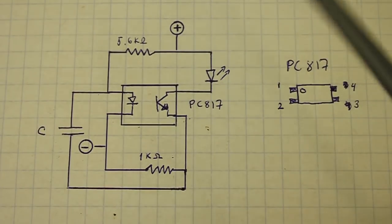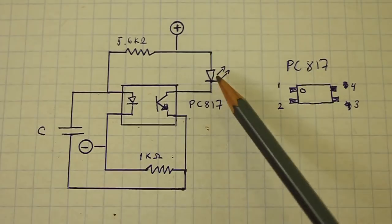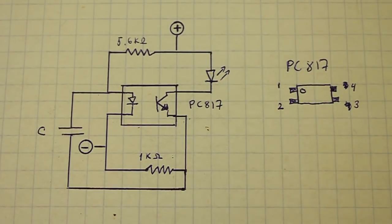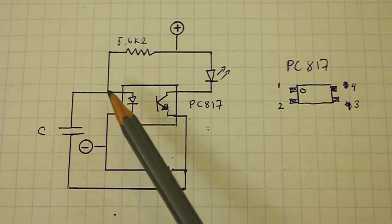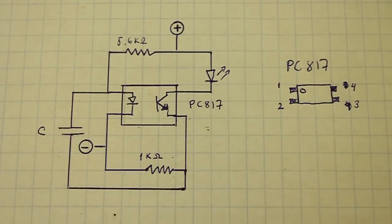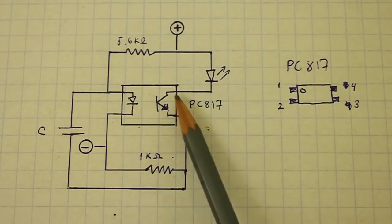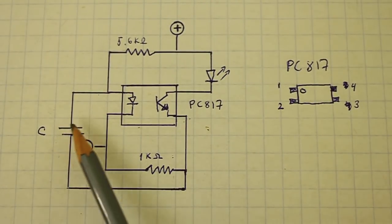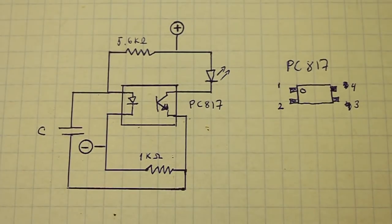Then the current can flow through our external LED which turns on but the current is consumed by the internal LED and the capacitor discharges. Then the voltage here goes down, the LED turns off, the transistor does not conduct anymore and our LED goes off. Then the capacitor starts to charge again and the cycle repeats.